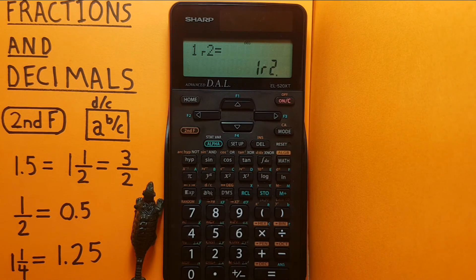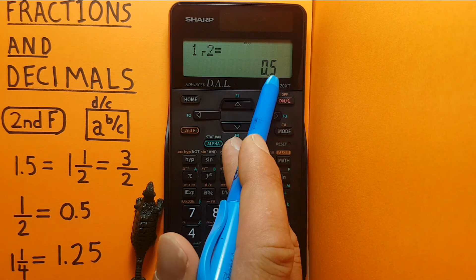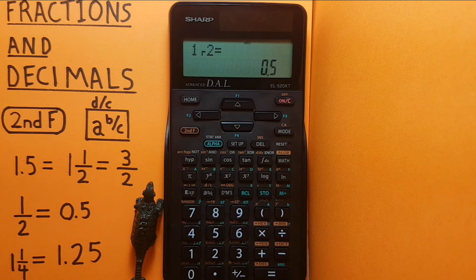So now we have our 1 over 2 on the top screen and we press the a b over c key and we get 0.5, which is the correct answer.